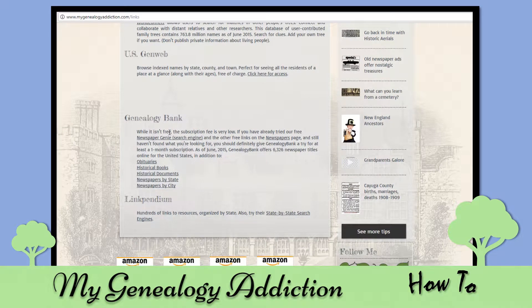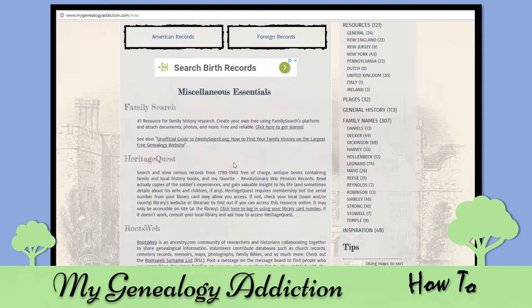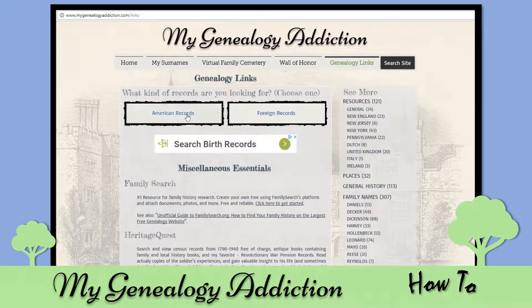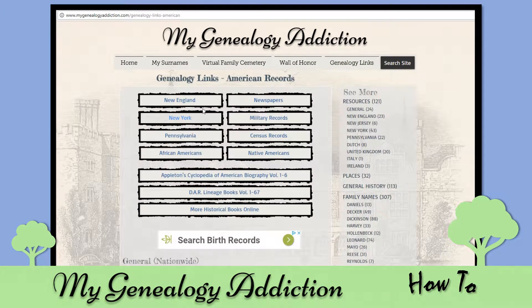Genealogy Bank is a paid site, but it is very good — there's a lot of good newspapers on there. So if you go into American records, you can see a lot of great resources for researching American ancestry: New England, New York, Pennsylvania, and more.